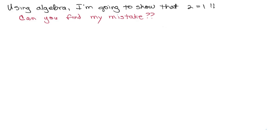We're going to start off with just saying that A is equal to B. So let's say we have two variables, A and B, and that they're equal to each other. The first thing I'm going to do is multiply both sides by A. I'm going to do A on the left side, and I'm going to multiply by A on the right side, and that's going to give me A squared equals AB.